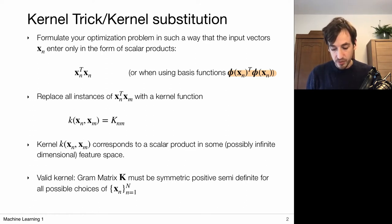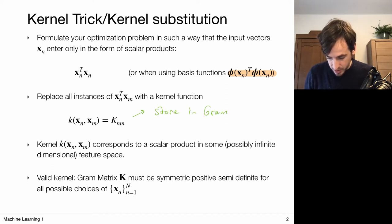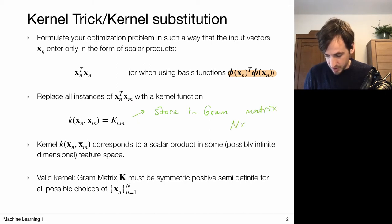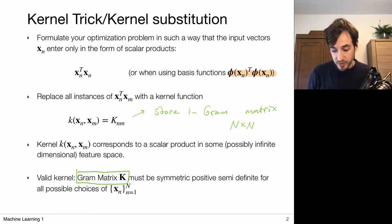This kernel function captures all the similarities between all data points and stores them into one big matrix whose elements we can denote k_nm. All these kernel evaluations are stored in a Gram matrix, which is going to be of size N by N. We replace all instances of this scalar product, or feature-based scalar product, with some kernel k.